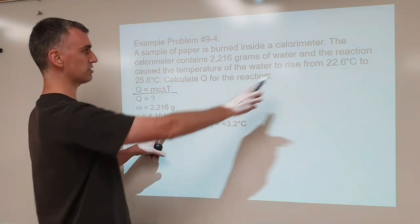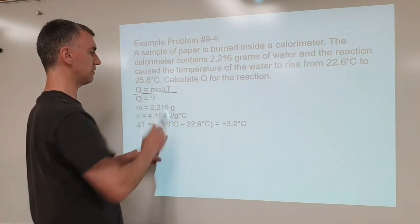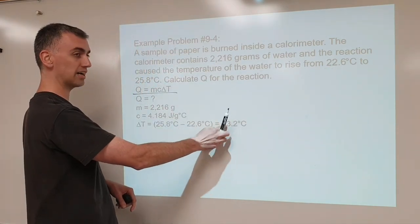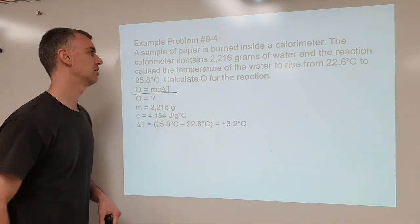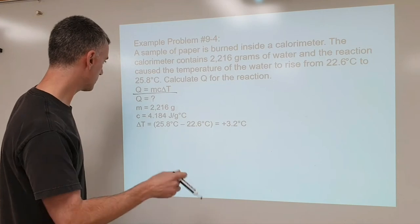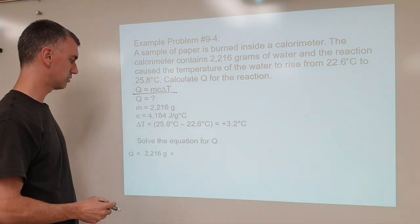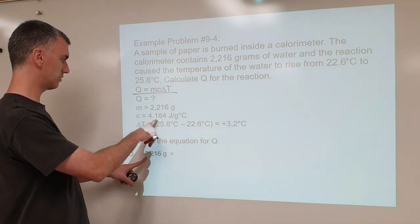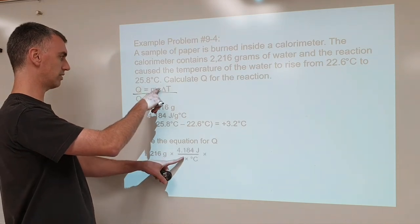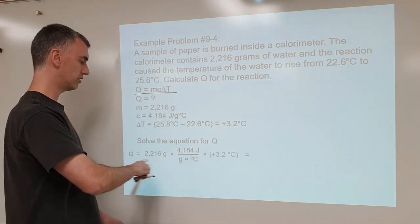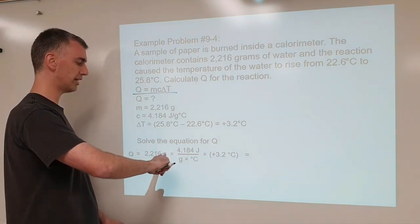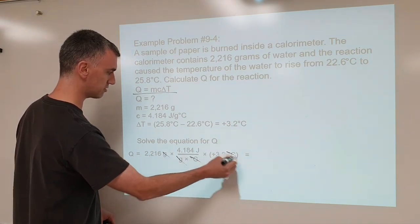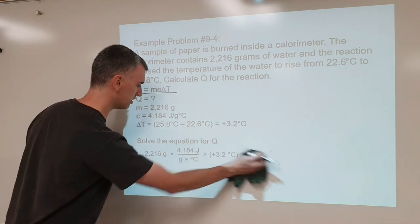The temperatures given are 22.6 degrees rising to 25.8 degrees. Since the temperature rose, subtract these in whatever order forces it to be a positive number. Once that's done, we can solve for Q. Plug the numbers into the equation: Q equals the mass of the water times the specific heat capacity of the water times the delta T of the water. It's absolutely mandatory to write units with all of your numbers — gram cancels gram, degrees Celsius cancels degrees Celsius, leaving just joules for your answer.